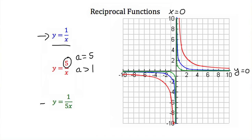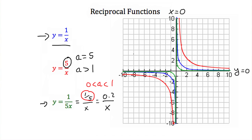Now let's look at the graph of y is equal to 1 over 5x. You can think of this as 1 fifth over x, or 0.2 over x. Here our a value is between 0 and 1, or it's some fraction. Notice that where this graph is drawn in green, it has the same asymptotes again, where x cannot equal 0 and y cannot equal 0, but the points on this function are closer to the asymptotes than in our parent function y is equal to 1 over x. That's because this graph has been shrunk by a factor of 5, or its a value is 1 fifth.